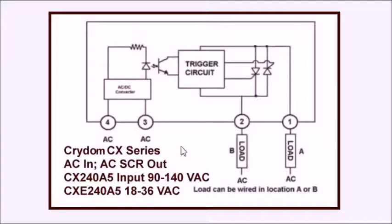This is an internal block diagram of the Crydom CX series with AC input. It has an AC to DC converter and your usual LED photo emitter, but this uses a photo transistor circuit that trips on a trigger circuit that trips on two back-to-back SCRs. As this shows, the AC load can be connected either in side A or side B. It doesn't matter.